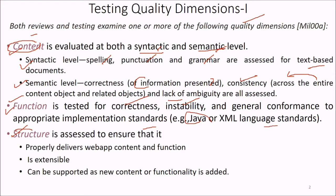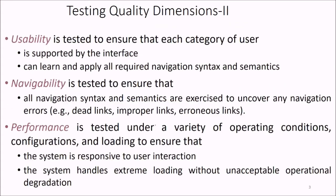Then comes structure. While it is assessed, we need to ensure that it properly delivers web app content and function. The structure must be extensible and able to support new content or functionality as it is added. Testing quality dimensions also include usability, navigability, and performance.